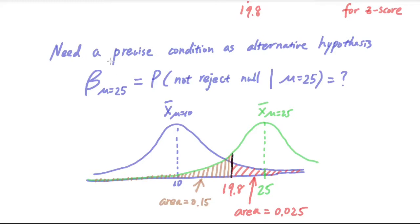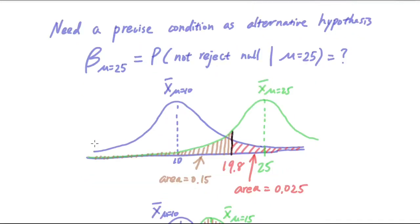So first of all, we need to define a precise condition for the alternative hypothesis. In this particular example, the condition for the alternative hypothesis is going to be mu equal to 25. So then to get beta, it's essentially the same as asking the question, what is the probability of not rejecting the null hypothesis given mu is equal to 25?